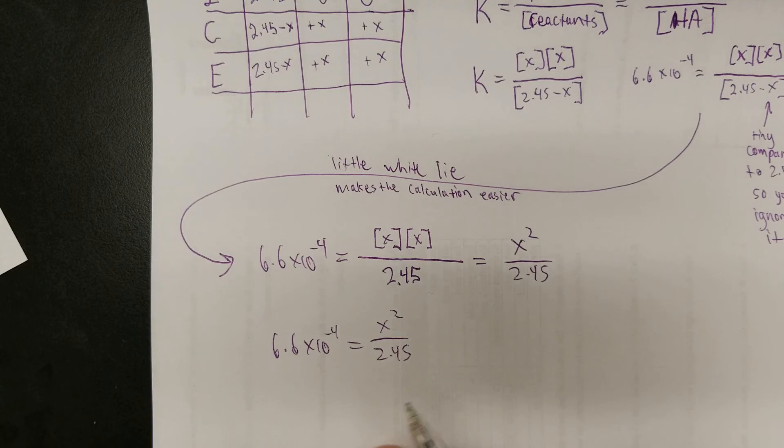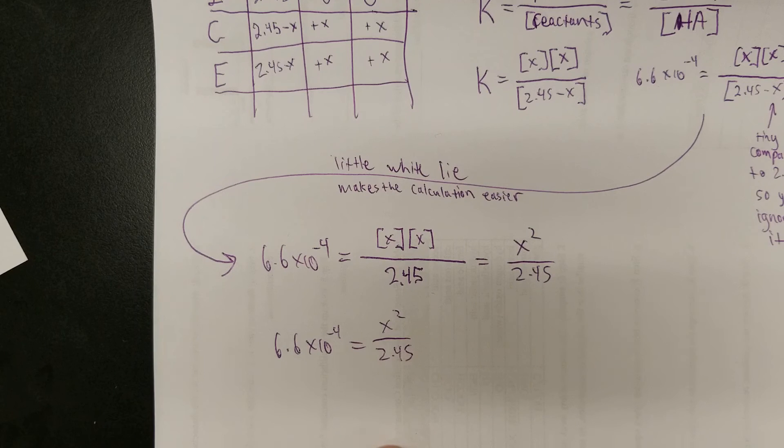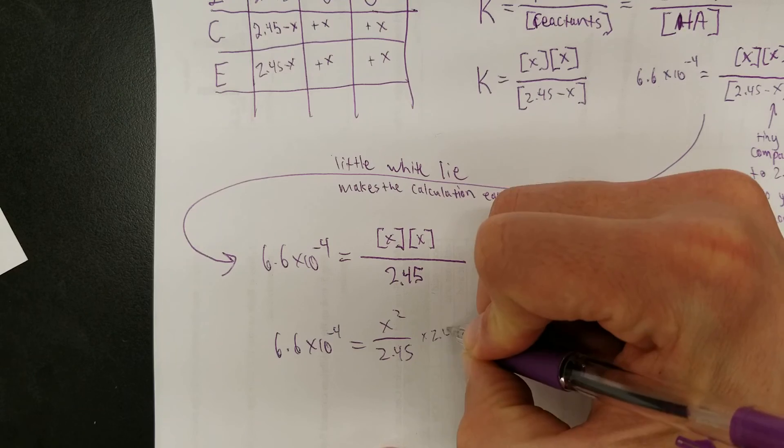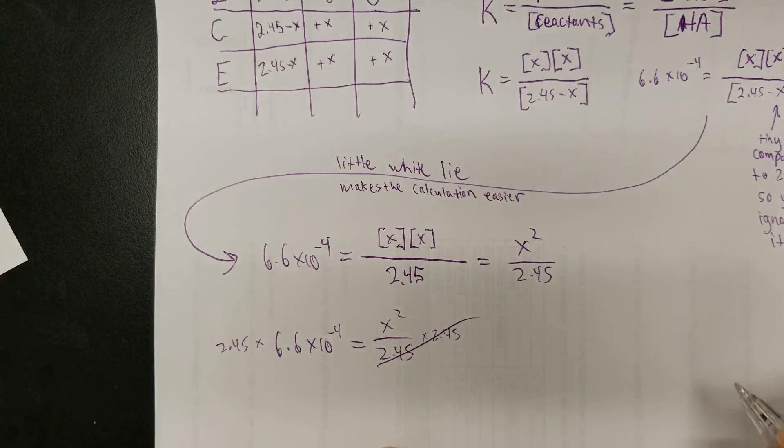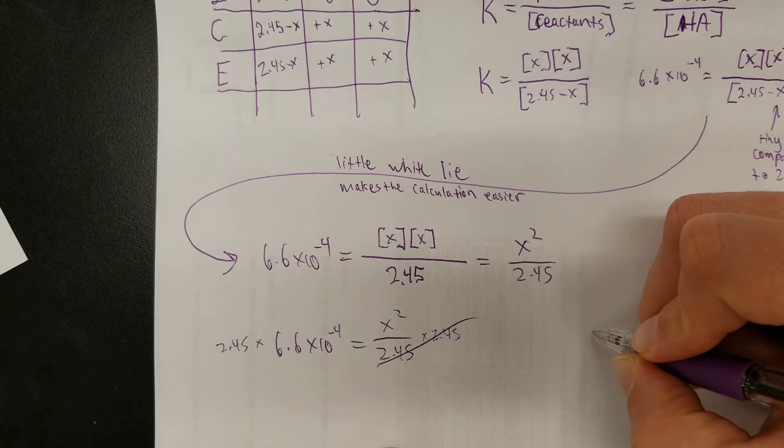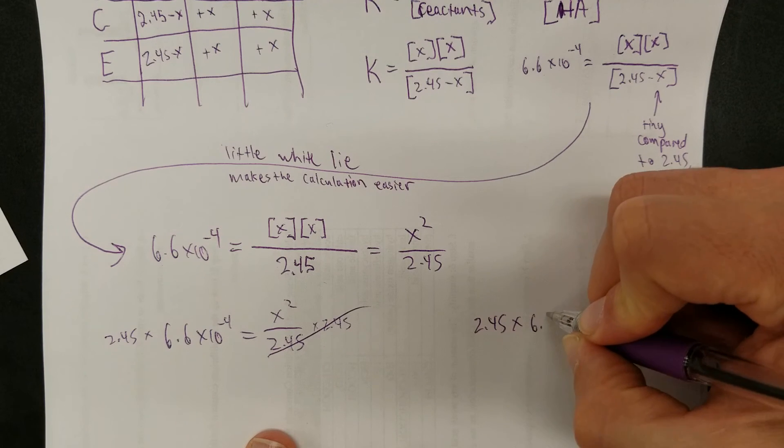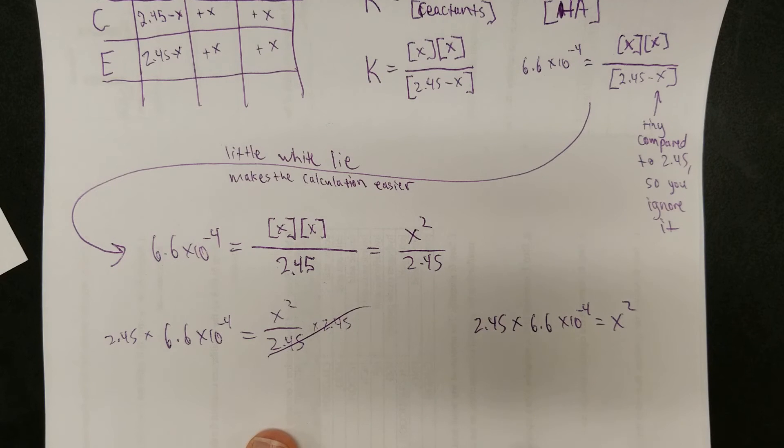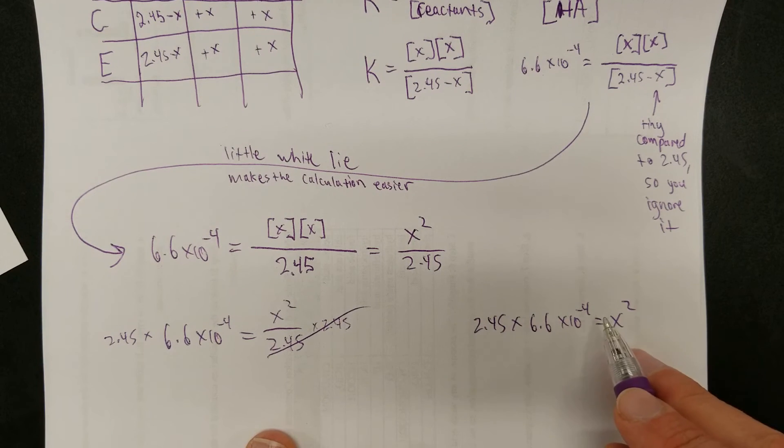So, given this right here, we just multiply both sides by 2.45. So, times 2.45, so these can cancel, and times 2.45 on this side also. Now we've got 2.45 times 6.6 times 10 to the negative fourth equals X squared. By taking the square root of each side, we can get X by itself.